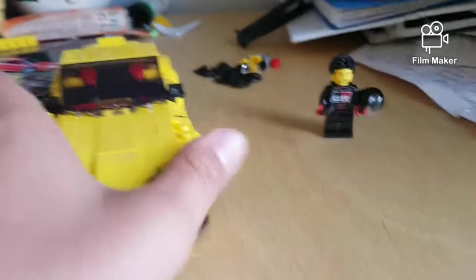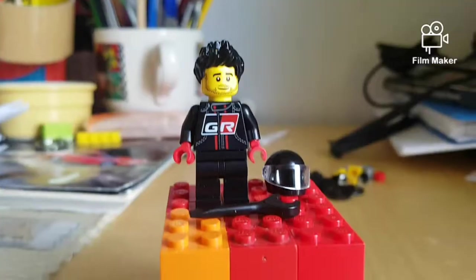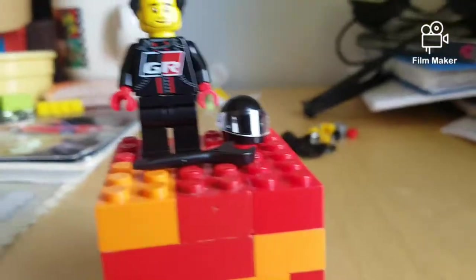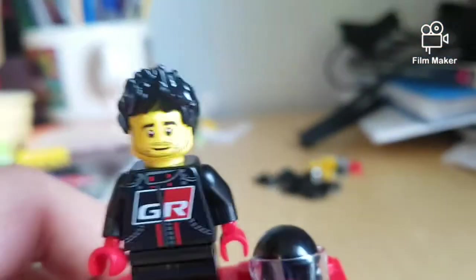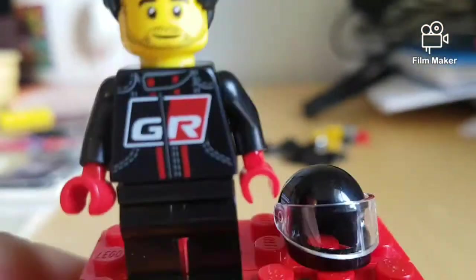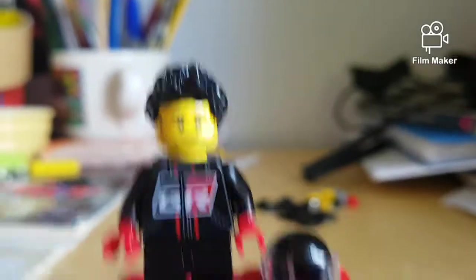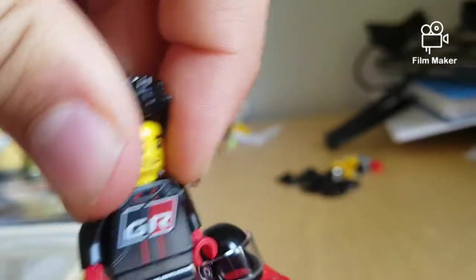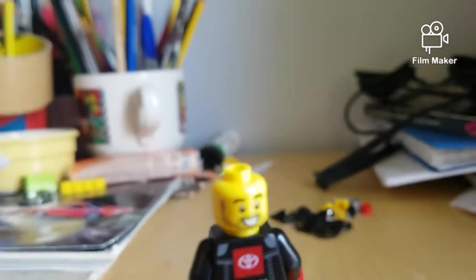So that's it, that's the set. Now let's move on to the review. Here is the driver of our Supra. He's got a spanner and a black helmet. He's got a nice printed torso with printing and a Toyota logo on the back. And this hair piece, flip it off and flip his head around for the other slightly happier face.